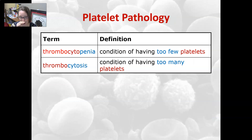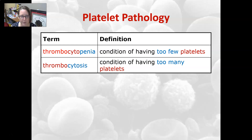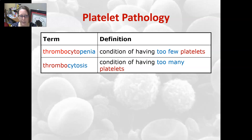Thrombocytopenia is a condition of having too few platelets, and thrombocytosis is a condition of having too many platelets. Neither is ideal — when you have too many, they are often not functioning correctly. That wraps up our pathology and signs and symptoms for blood.